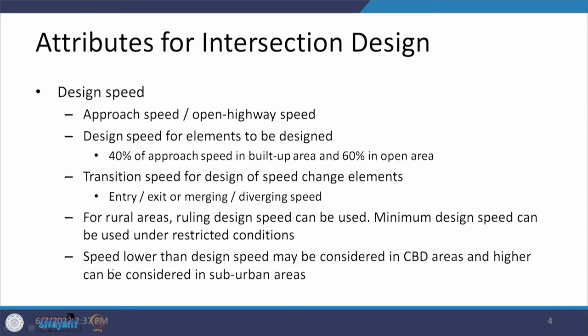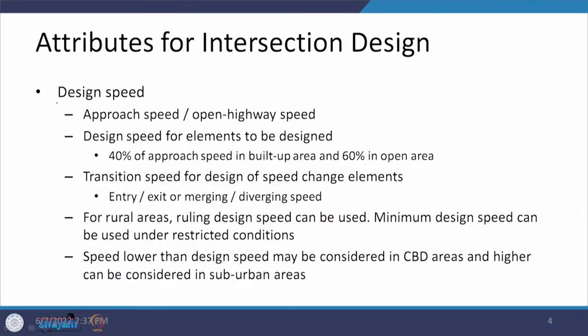When looking at the design of an intersection, there are many elements which need to be designed. We have an approach, and there may be turnings to the left and right. All of these things require different types of speeds to be considered. As the first attribute, we are looking at design speed — specifically the approach speed to an intersection, which in the case of open highways can also be considered as the open highway speed.